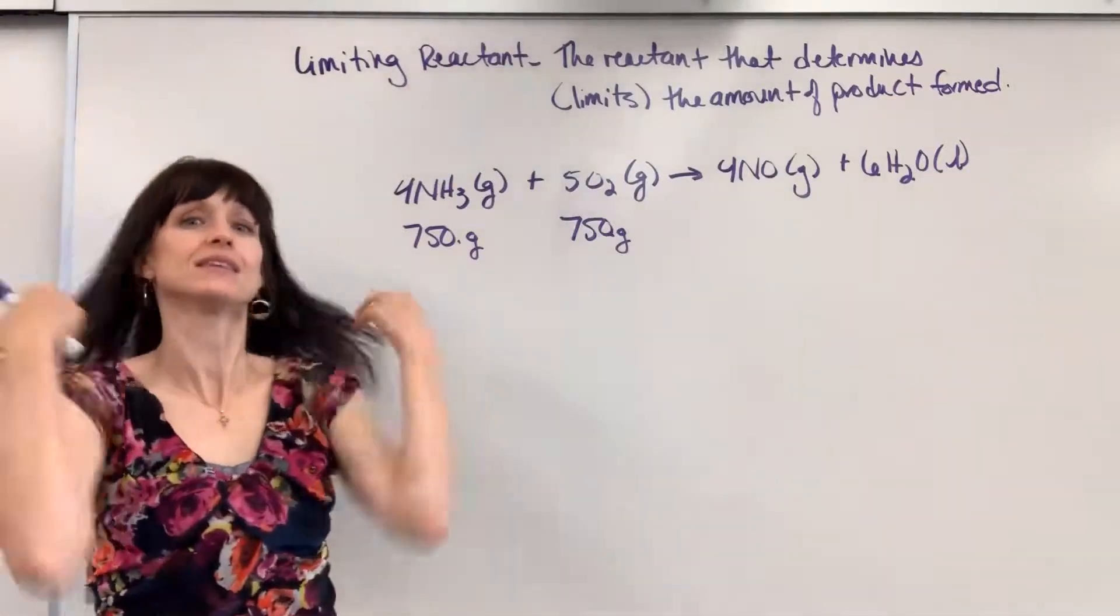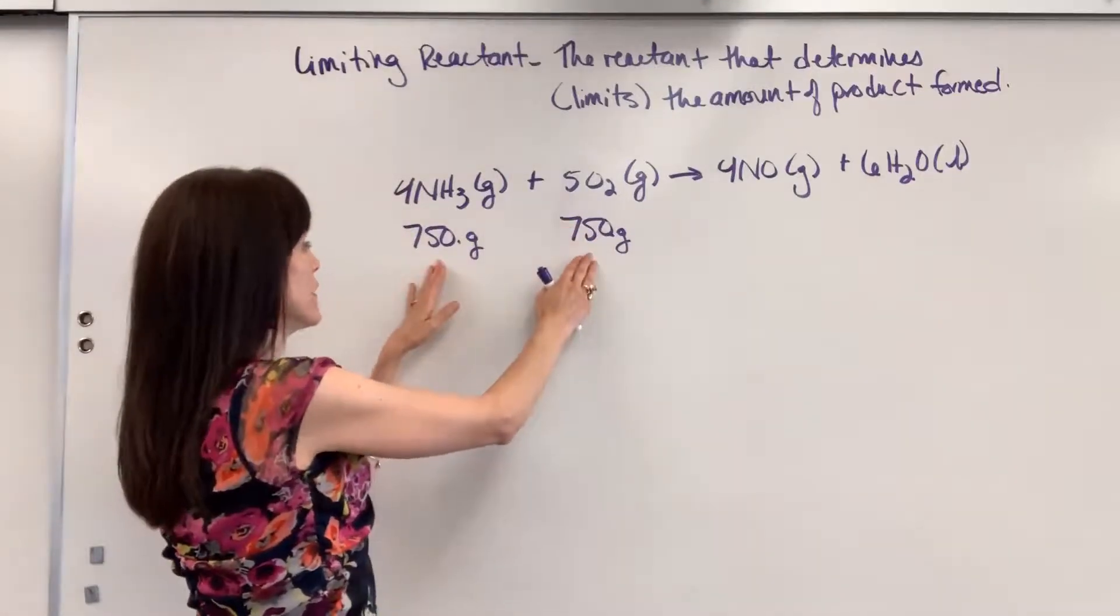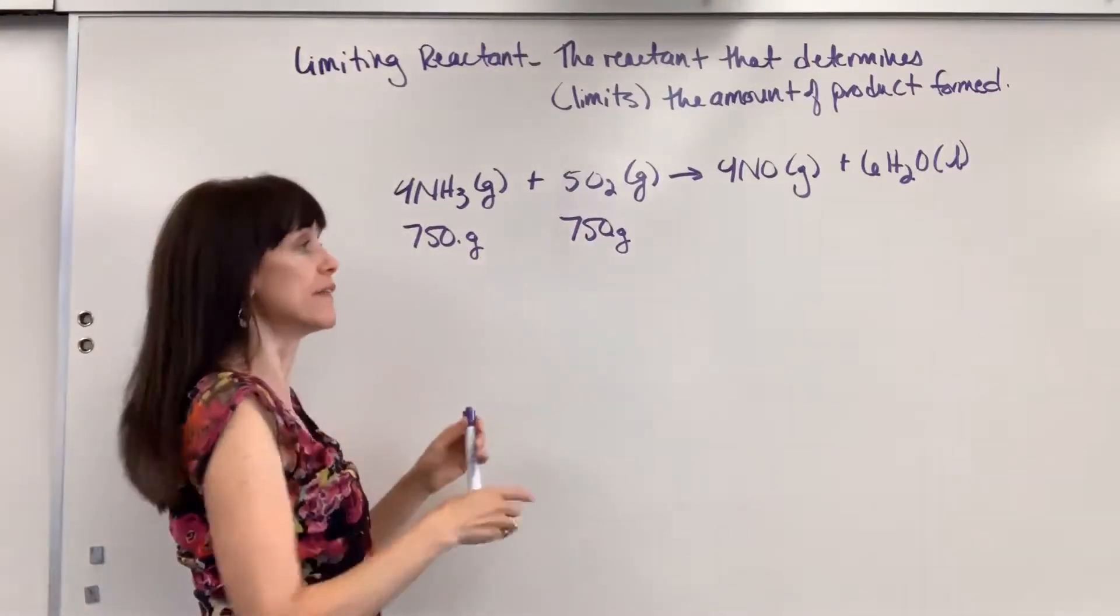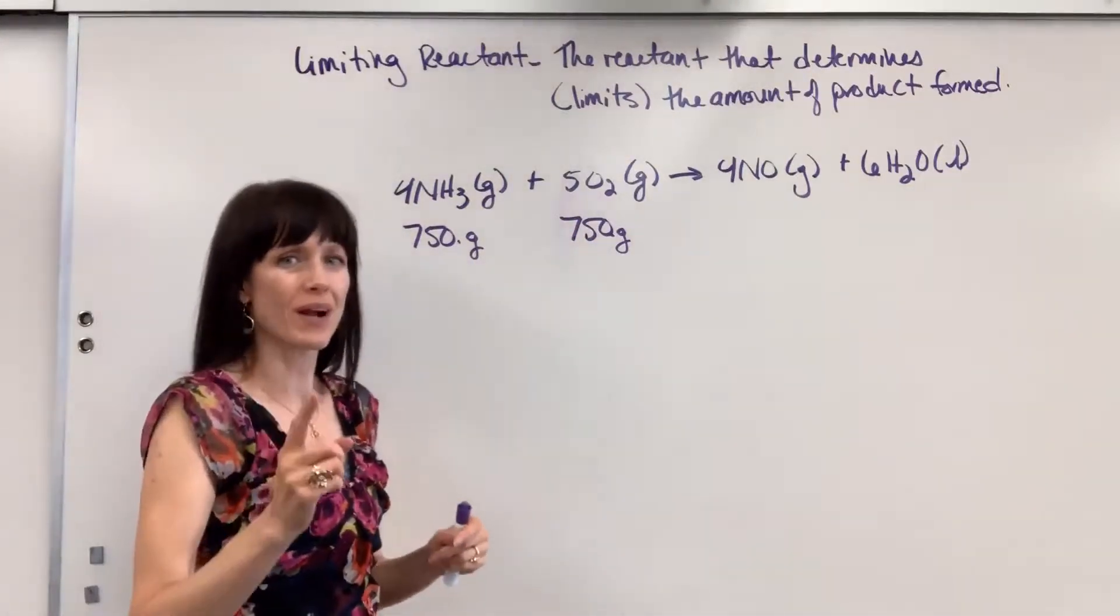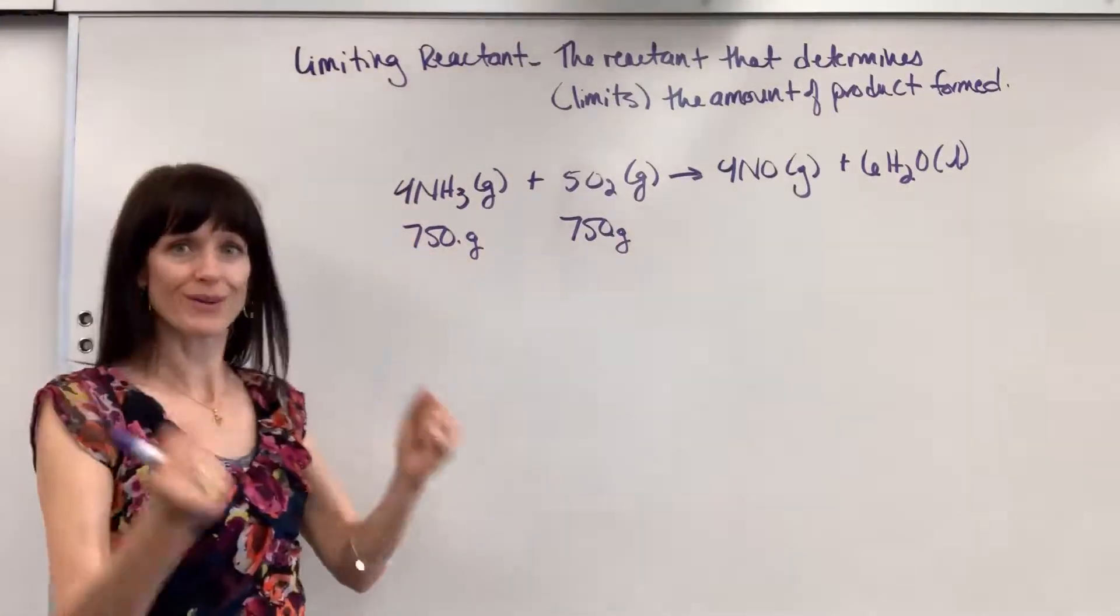So to begin, this is how I do it. First, I'll have my balanced chemical equation. I write down the amount that I'm given for each reactant and then I pick one product